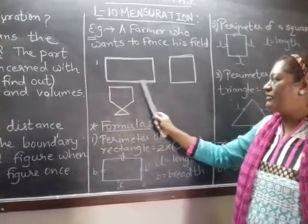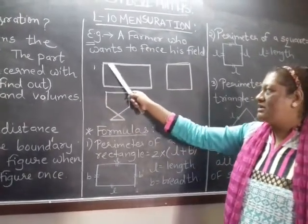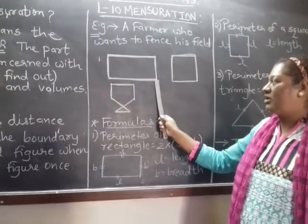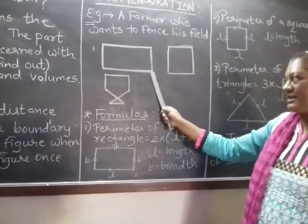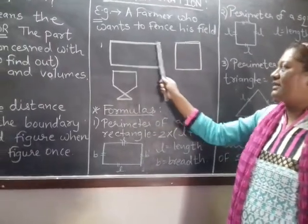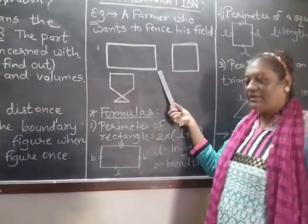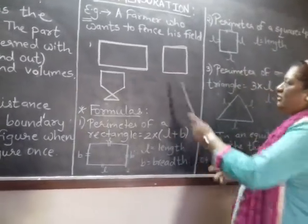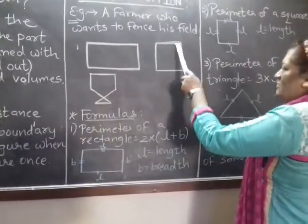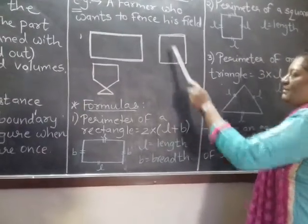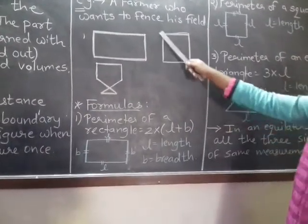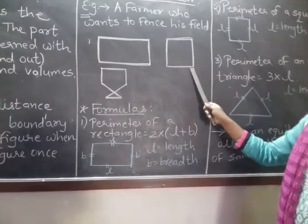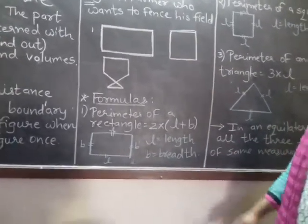When you want to measure the boundaries of a particular object, this orange color what you see, these are the boundaries of a particular object. Here, we can call it rectangle. Here, these boundaries are nothing but when you want to calculate the boundaries, we use the perimeter. Here also, you can see a square with orange boundary. That orange boundary is called the perimeter when you want to measure the boundaries of surrounding object, surrounding the object that is called perimeter.